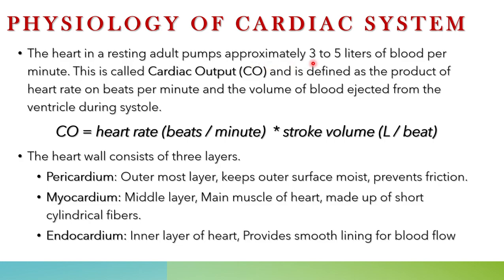A normal resting adult heart pumps approximately three to five liters of blood per minute. This is called cardiac output, defined as the product of heart rate in beats per minute and stroke volume — the volume of blood ejected from the ventricle during systole. So: cardiac output = heart rate × stroke volume.